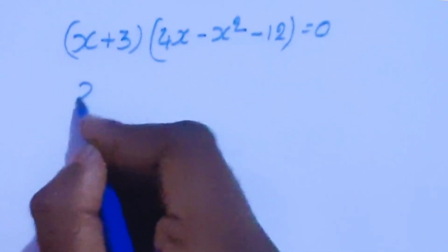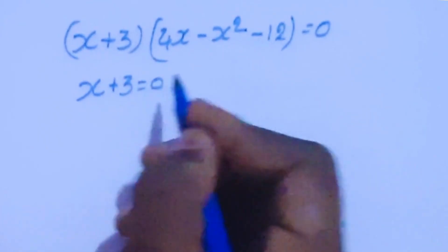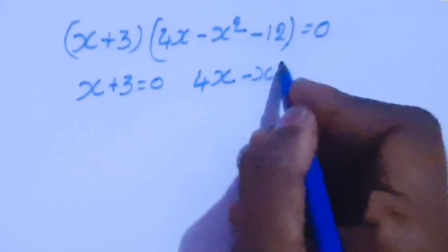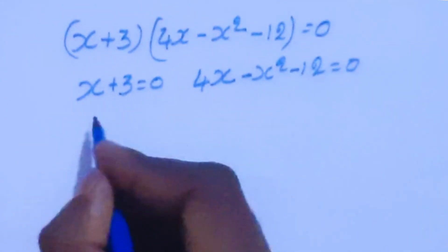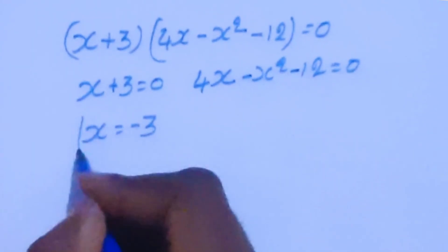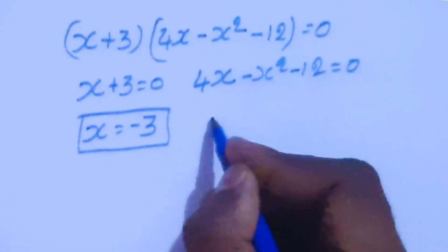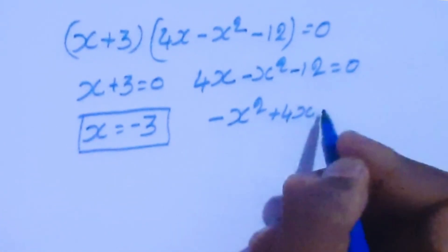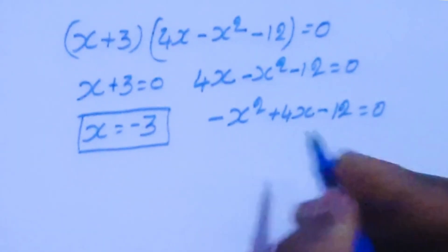From this equation, x plus 3 equal to 0, which gives x equal to minus 3. This is one value. From the other factor: x squared minus 4x plus 12 equal to 0 — wait, we have 4x minus x squared minus 12 equal to 0, so rearranging: x squared minus 4x plus 12 equal to 0.